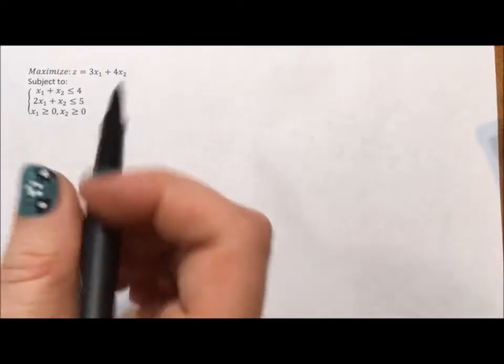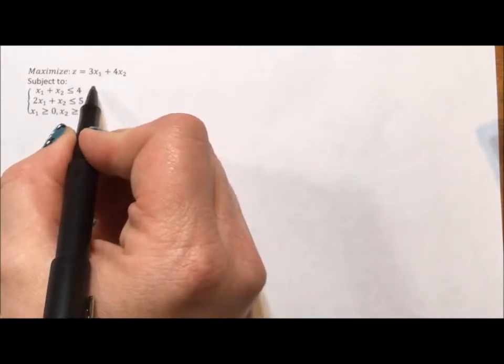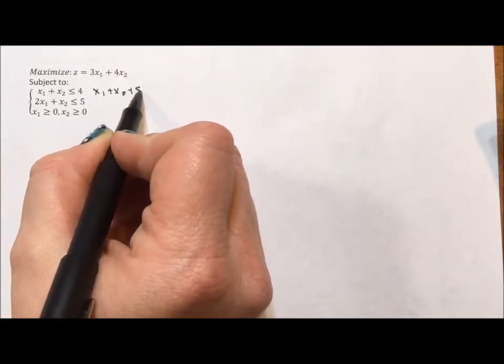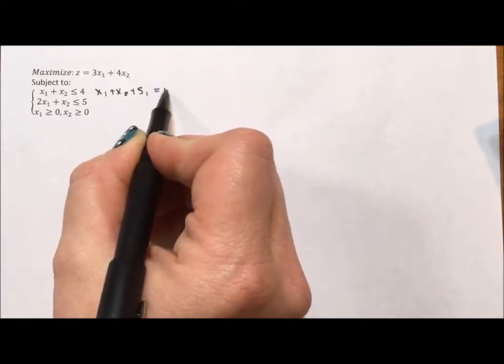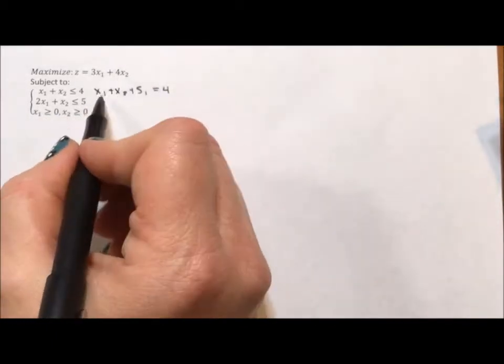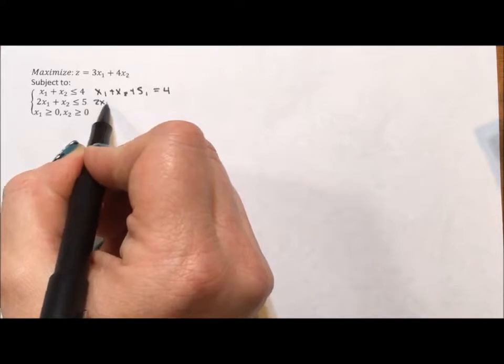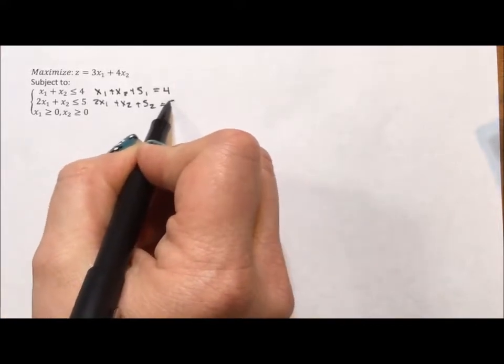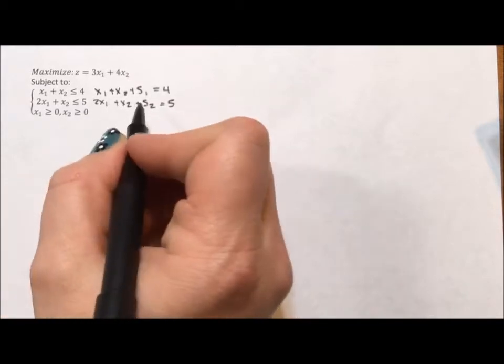So what we're going to do is we're going to imagine that each of these equations has a slack variable, and that slack will make it equal to 4 instead of less than or equal to. 2x1 plus x2 plus a second slack. And so now we can set up a matrix.